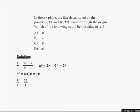Hello everyone, welcome to my free online tutorial for the new SAT math section. The problem that you see on your screen right now is taken from the new SAT study guide, this is practice test 3, problem number 26, section 4, calculator allowed. In the xy-plane, the line determined by the points (2, k) and (k, 32) passes through the origin. Which of the following could be the value of k?